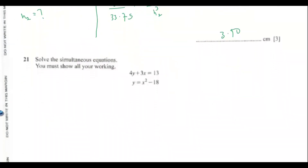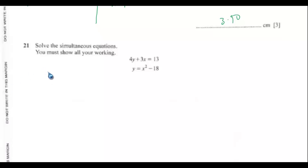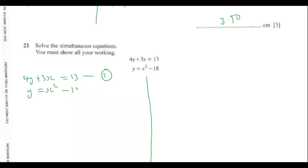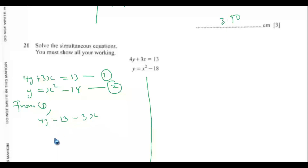Question 21. Solve the simultaneous equations — you must show all working. Let 4y + 3x = 13 be equation 1, and y = x² − 18 be equation 2. From equation 1, making y the subject: 4y = 13 − 3x, so y = (13 − 3x)/4. Call this equation 3.